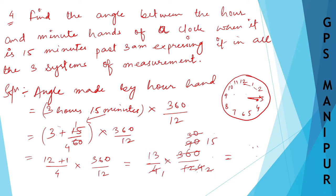So 15 × 13 = 195, divided by 2. This gives 195/2 degrees. That is the angle made by the hour hand.